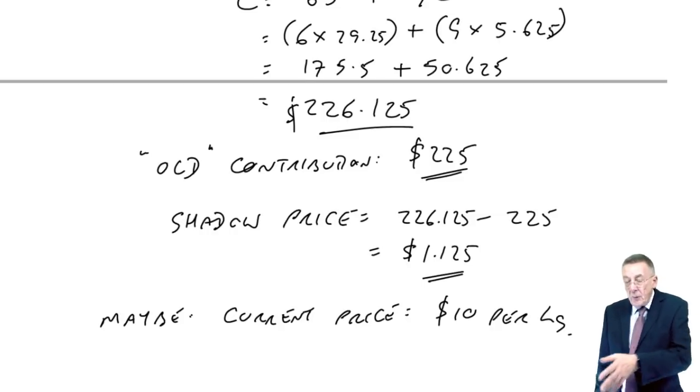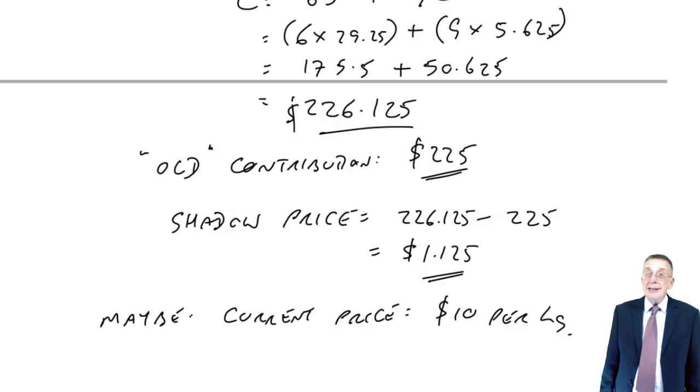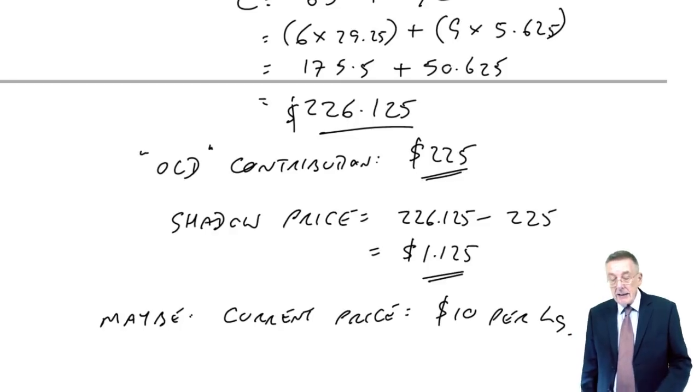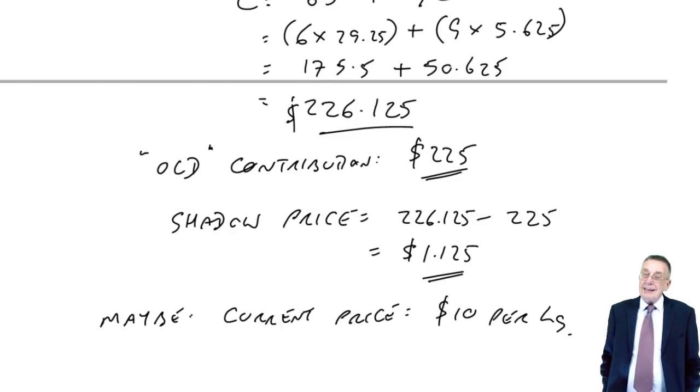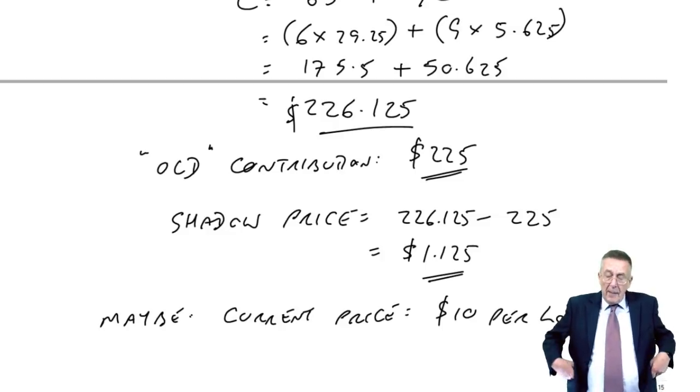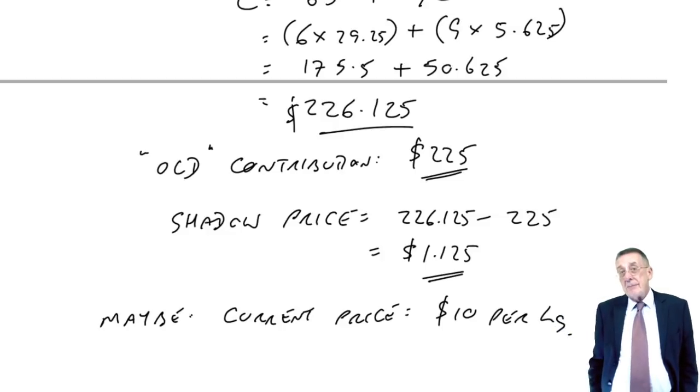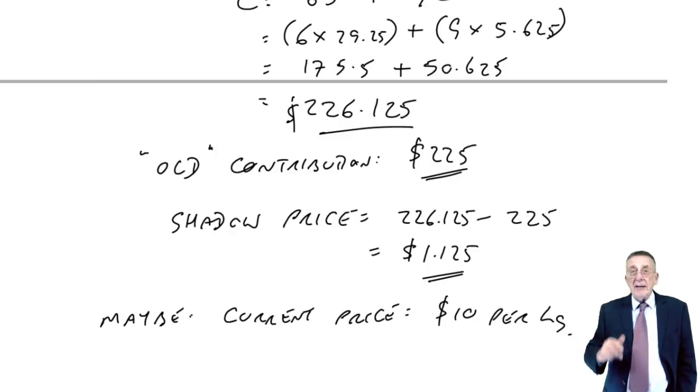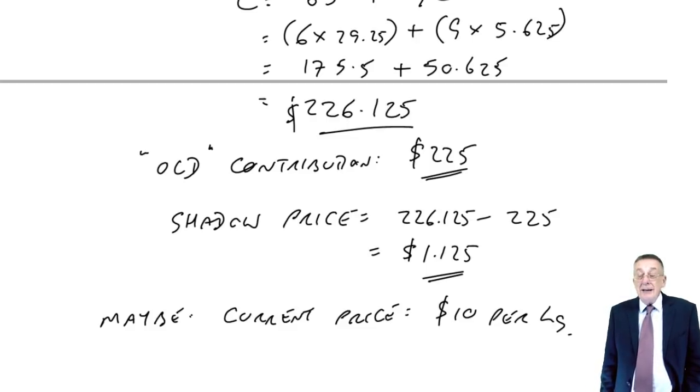Well, if we carried on paying normal price, we'd get an extra $1.125 contribution. But if we have to pay extra for that one extra kilo, well, we'd be prepared to pay extra over and above the current price. But the most extra we'd pay is $1.125. So on my invented figure of a current price at $10, if we could buy extra and pay $11, it's worth doing. That one extra costs us an extra dollar, but gives us an extra $1.125 contribution. You know, we get the net benefit. But if people are going to charge $12, $2 extra for a kilo, it wouldn't be worthwhile. You're not going to pay $2 to get the contribution up by only $1.125.